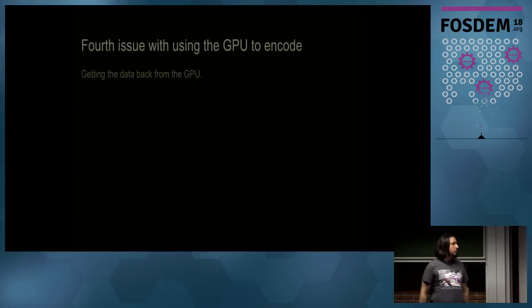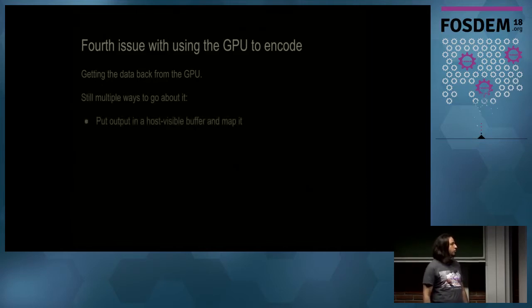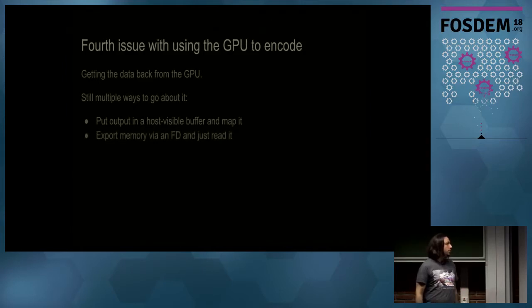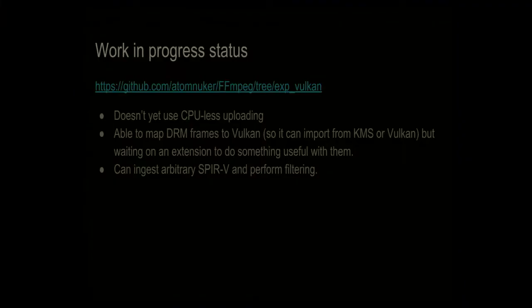The final issue with using the GPU for encoding is getting the data back out. Vulkan allows many ways to do this — you could put it in a host-visible buffer and map it, or even export memory via a file descriptor and read it like a standard file descriptor, with the driver doing the copying as needed. This is my work-in-progress tree. Right now it doesn't use CPU-less uploading, but it does do arbitrary filtering, and it is able to import DRM frames. Hopefully it will get merged into the FFmpeg tree soon so you can give it a test and run arbitrary shaders.